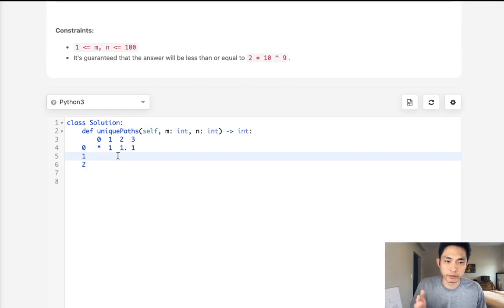In the same way, in the first column, there's only going to be one path to all of the cells in the first column, because you can only move down—there's no other way to get there.